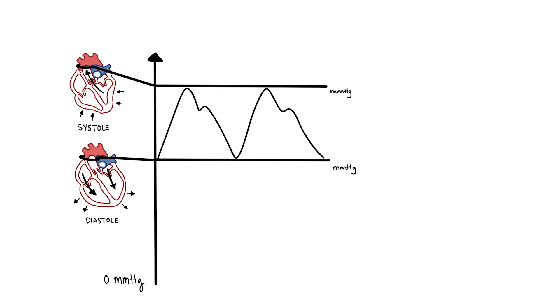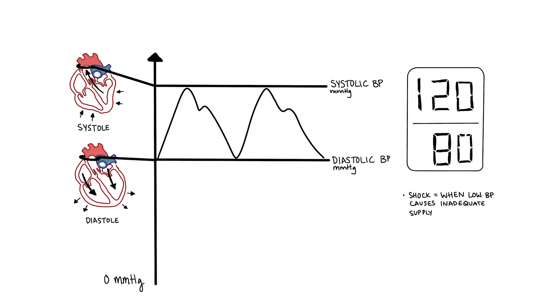An important concept to understand is that of mean arterial pressure when talking about shock. Blood pressure is classically made up of two readings, the systolic blood pressure over the diastolic blood pressure. An average blood pressure for a normal healthy adult is 120 over 80 mmHg. Shock occurs when the blood pressure is low, causing inadequate supply of oxygen to the tissues or the organs.